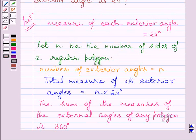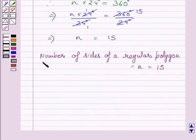As per our assumption, N is the number of sides of a regular polygon. So we can write number of sides of a regular polygon is equal to N is equal to 15.